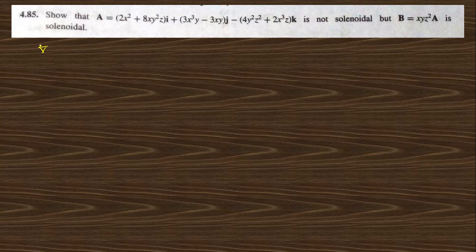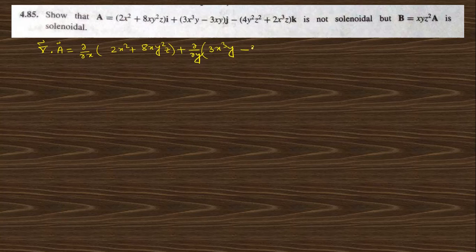Go to question 4.85. This question says that vector A is not solenoidal and vector B is solenoidal. For a vector to be solenoidal, its divergence must be 0. So we check the divergence of A. The divergence of A is: ∂/∂x of (2x² + 8xy²z) + ∂/∂y of (3x³y − 3xy) + ∂/∂z of